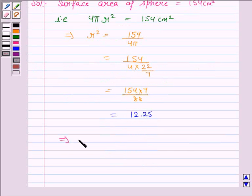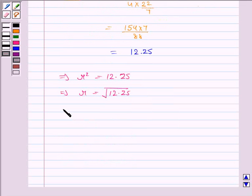So, r² is equal to 12.25. This implies r is equal to the square root of 12.25. That implies r is equal to 3.5.